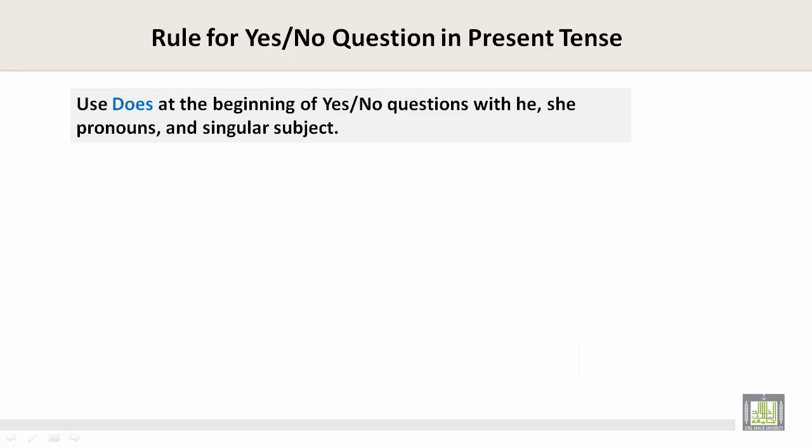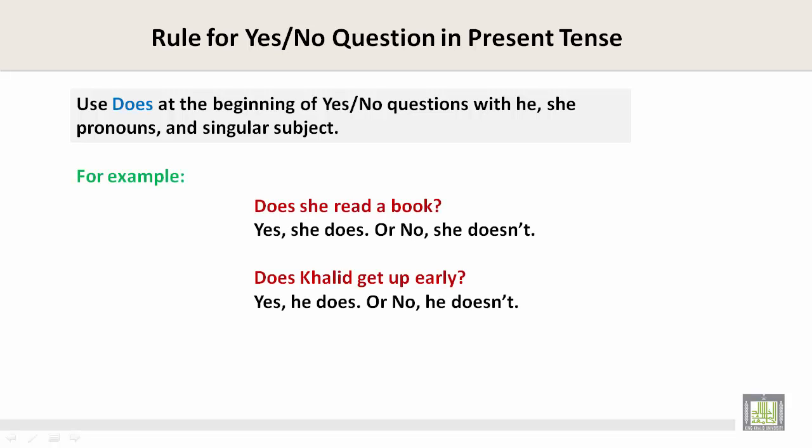Use 'does' at the beginning of yes or no questions with he and she pronouns and a singular subject. For example: Does she read a book? Yes, she does. Or no, she doesn't. Does Khalid get up early? Yes, he does. Or no, he doesn't. The rule is: does + subject + verb + object.